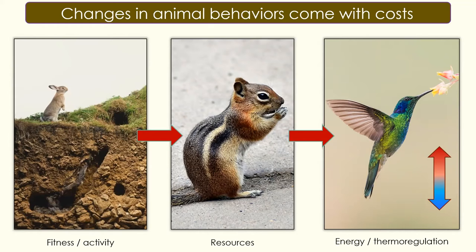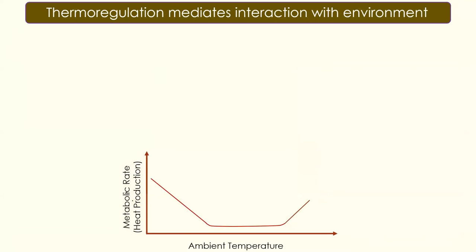Thermoregulation plays a huge role in activity and how an animal mediates its interaction with the environment. Most endotherms will try to maintain themselves within the thermal neutral zone — the area where the rate of heat production within the animal is nearly equivalent to the rate of heat lost to the environment. The thermal neutral zone is categorized by an upper and a lower critical limit, and outside these boundaries the cost of maintaining optimal body temperature becomes higher.